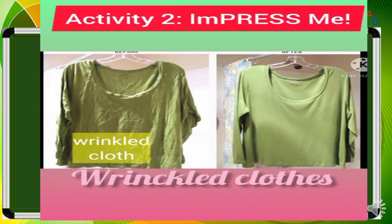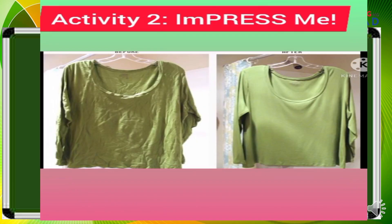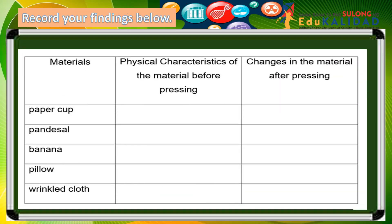Wrinkled cloth when pressed with hot iron will change from being wrinkled into smooth and fine texture. Now record your findings on the observation table. What is the physical characteristics of paper cup, pandesal, banana, pillow, and wrinkled cloth before pressing? What are the changes in the materials after pressing?